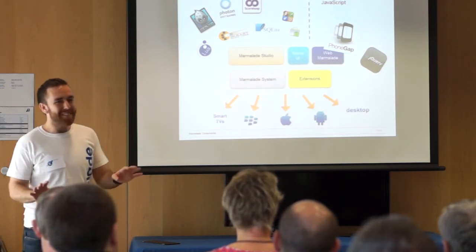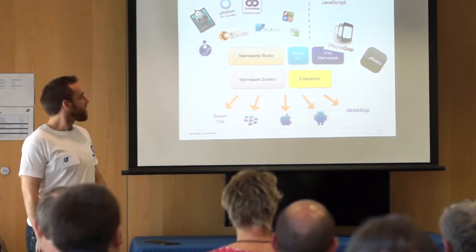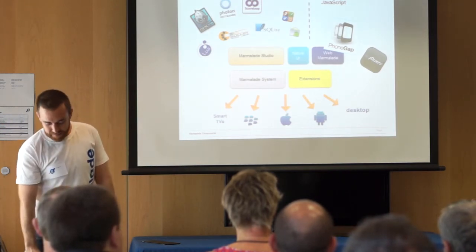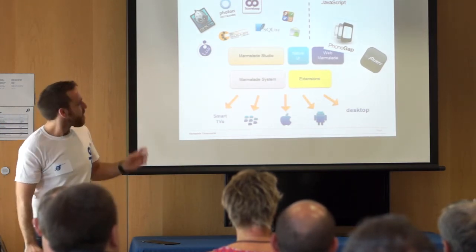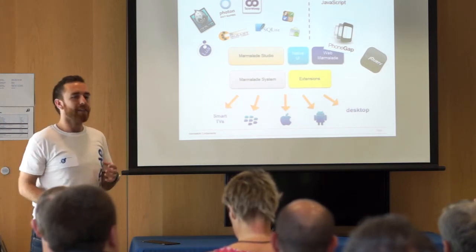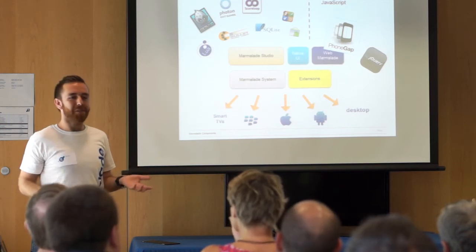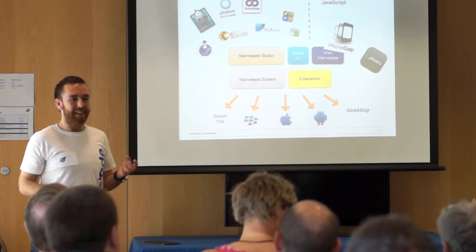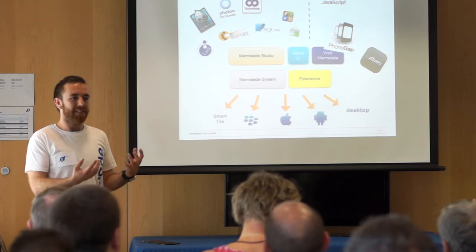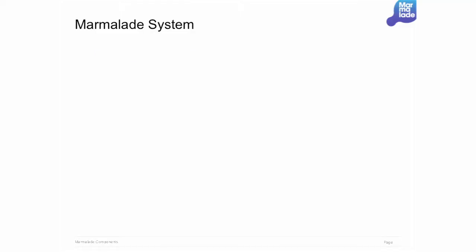Hopefully that was not too confusing. Just to give you an idea of what's in the toolkit and what you get out of the box, I'm going to run through these components really quickly. I think one thing we don't really do much in our documentation is say how is this actually achieved — what is it that allows us to have this single high-speed native binary running on all these platforms?